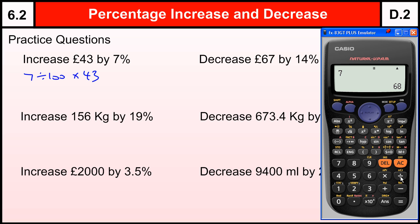So 7 divided by 100 times 43, that gives us our percentage increase, which is £3.01. So 43 plus 3.01. If you leave that number in your calculator, you can just add 43 and that will give you £46.01.